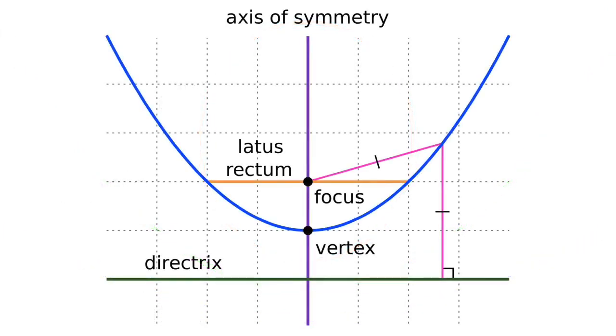A parabola is the locus or path of all points in a plane that are equidistant from a given line known as the directrix, and a given point not on the line known as the focus.